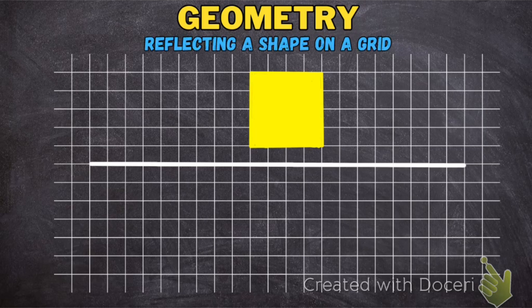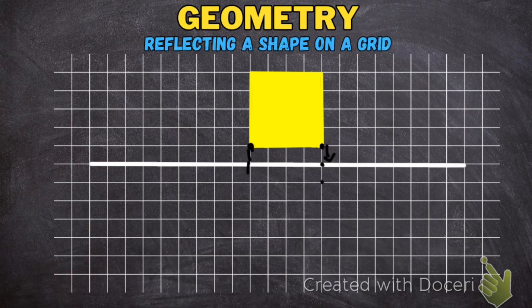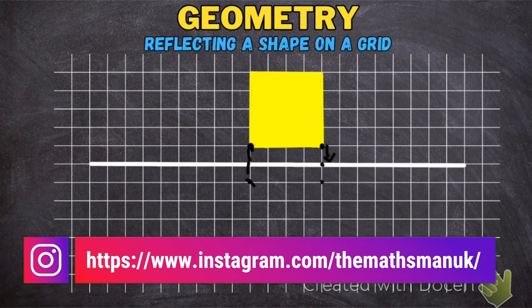So here I have a square and I need to reflect it across this mirror line here. The trick is to pick any point on the shape. I'm going to pick this bottom right-hand corner and count how many squares it is until the mirror line — so it is one. So it must be one on the other side. The first point is going to be there. Then I'm going to pick the next corner of the square — it's one to the line, so it must be one past the line, so the new corner will be there.